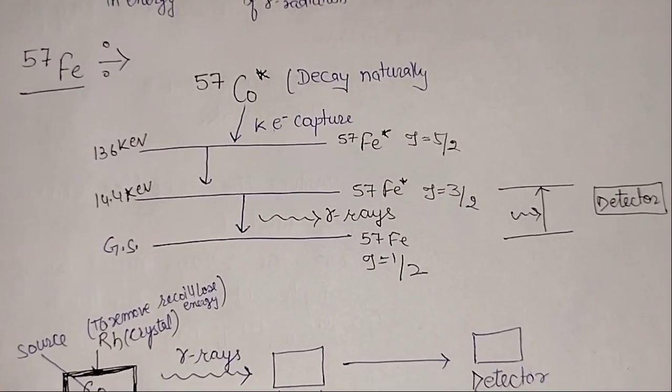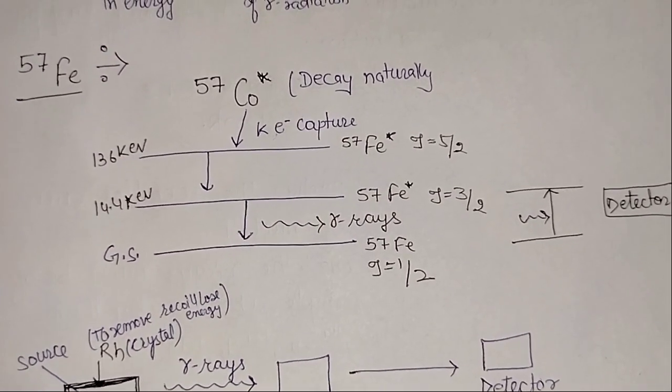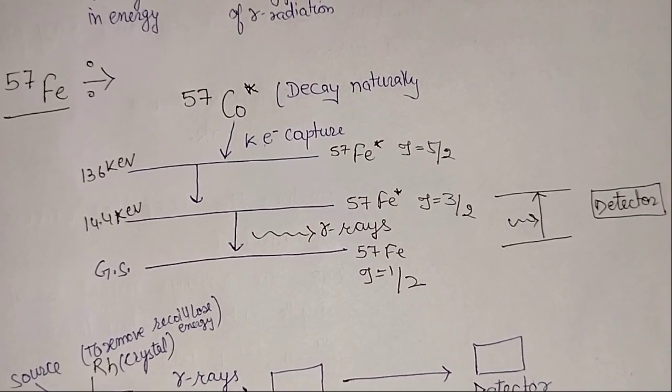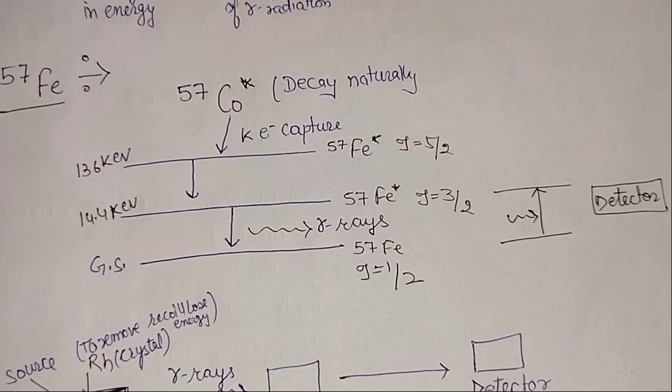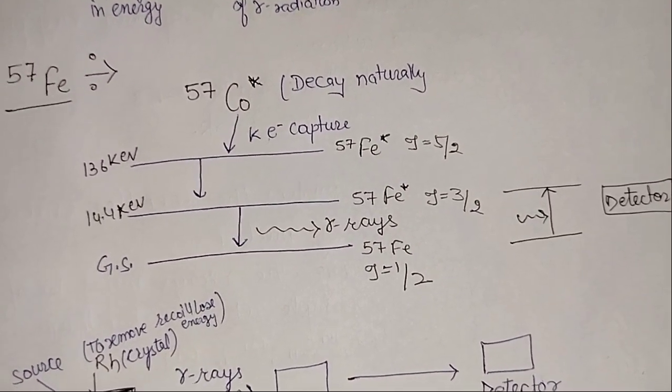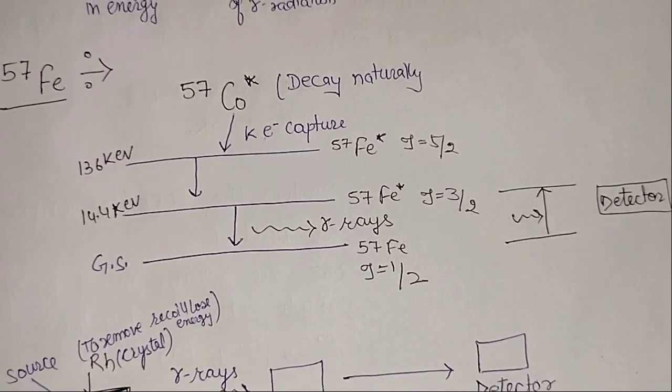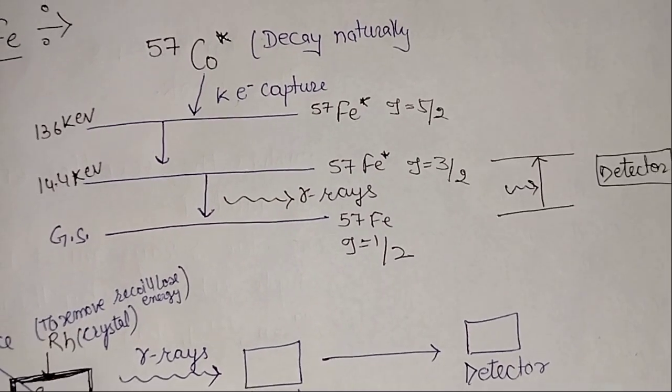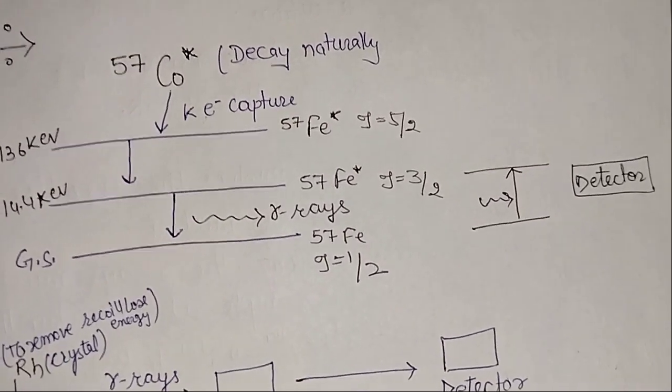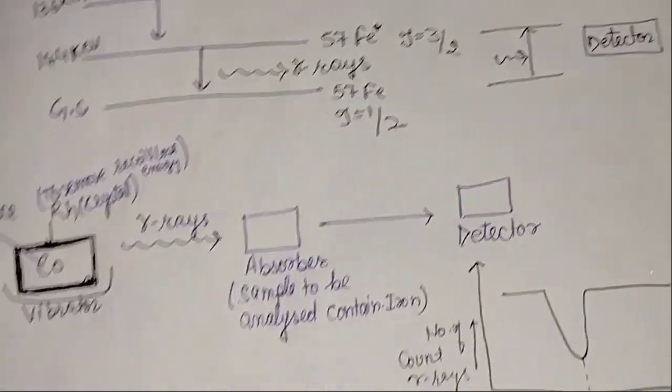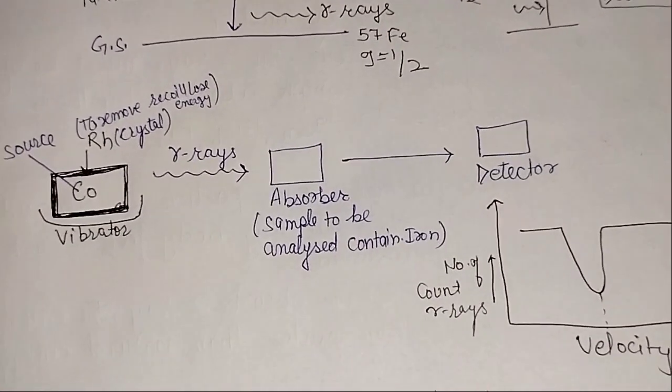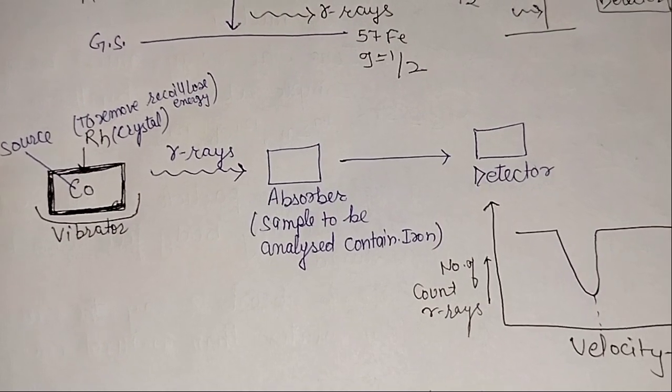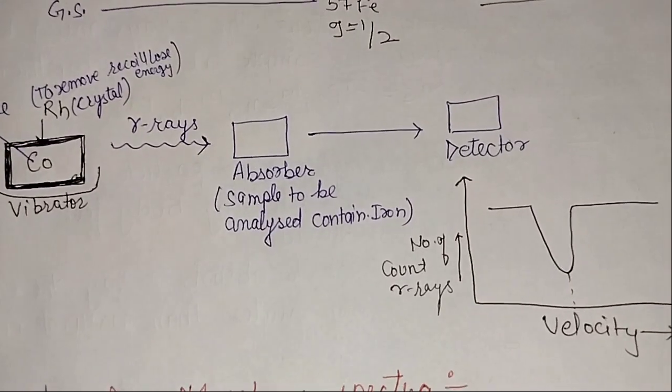The best source used in Mossbauer spectroscopy is iron-57. But we don't use iron-57 directly; we use cobalt-57, which decays naturally. The K-shell captures the electron and converts it into iron-57 with 136 keV energy. Then it goes into the first excited state, which is most important, and then to ground state, emitting gamma rays. The source is cobalt on a vibrator covered with rhodium crystal so it won't lose recoil energy. The gamma rays are emitted, absorbed by the absorber, and detected by the detector. The number of gamma counts equals velocity, which is the Doppler effect.